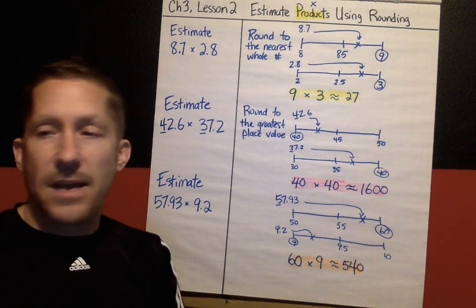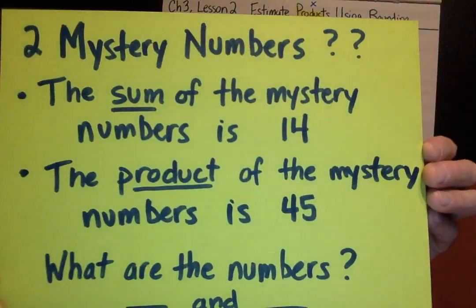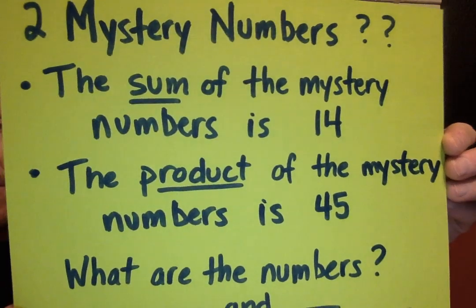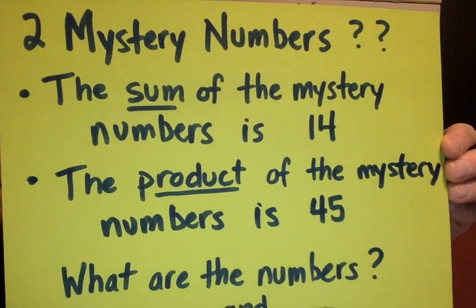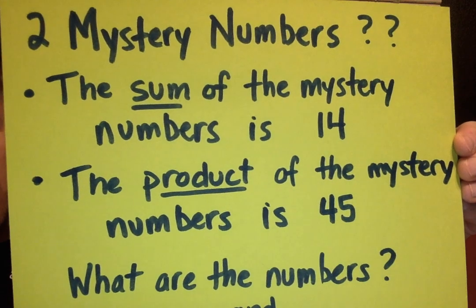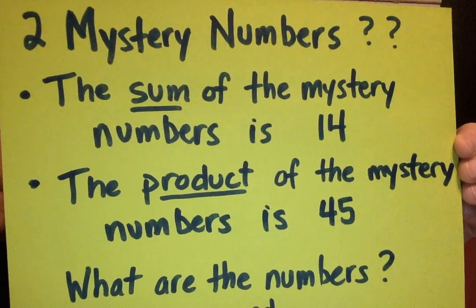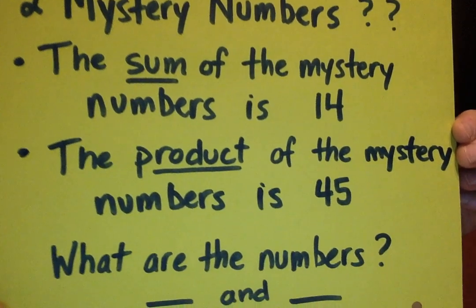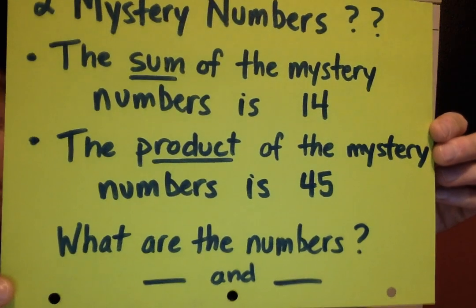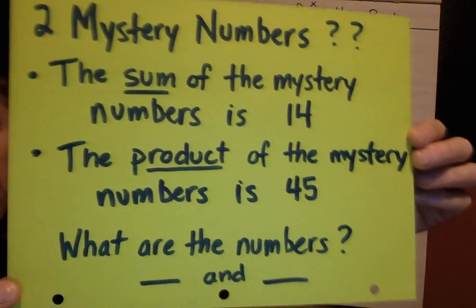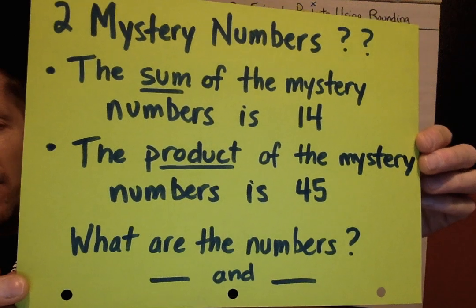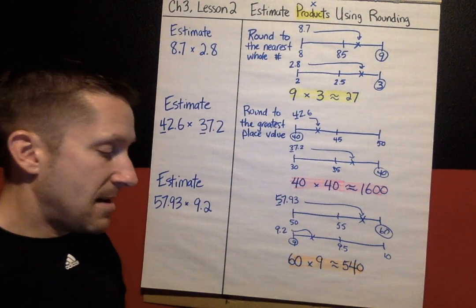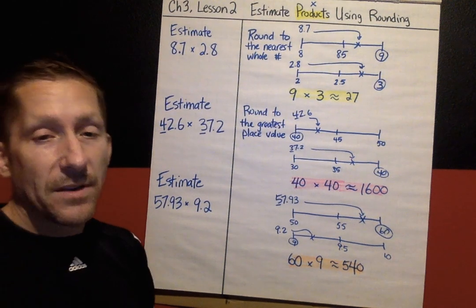Here is the puzzle for today: a mystery number puzzle. There are two mystery numbers and two clues. Clue one: the sum of the mystery numbers is 14. Clue two: the product of the mystery numbers is 45. What are the two mystery numbers? We will check who can solve this on the next lesson. See you next time — Chapter 3, Lesson 3.